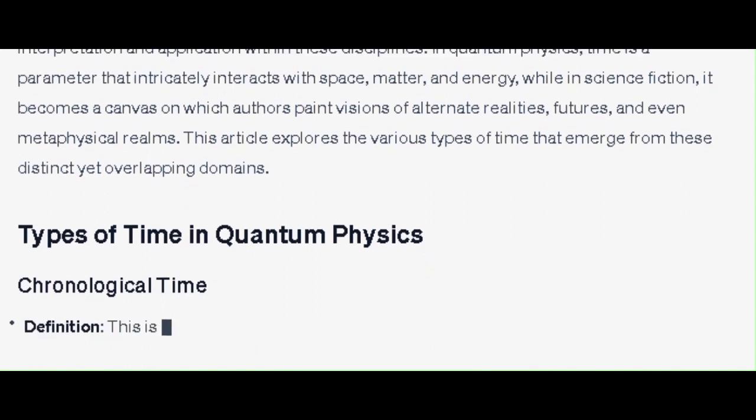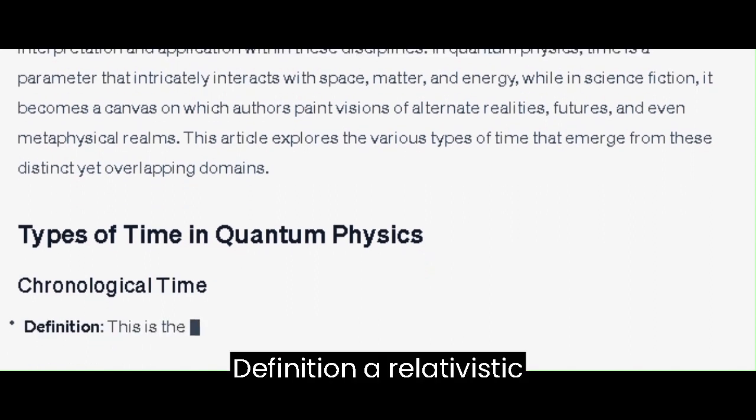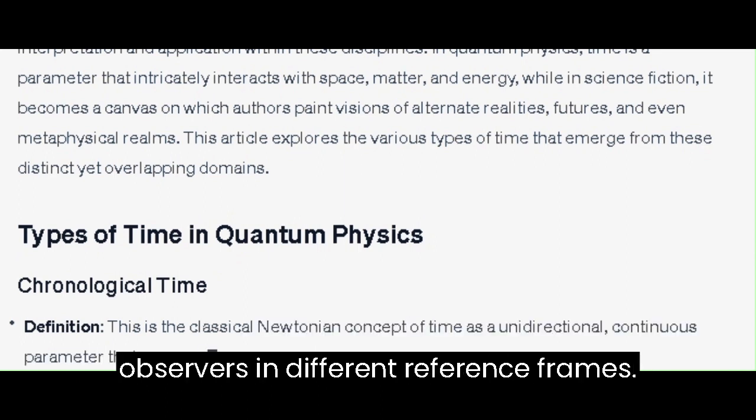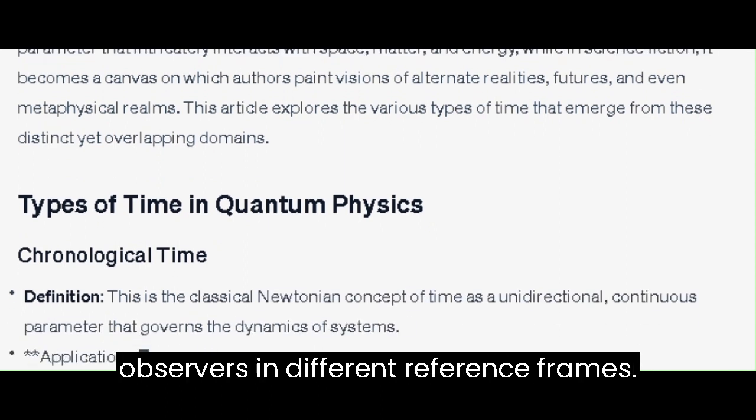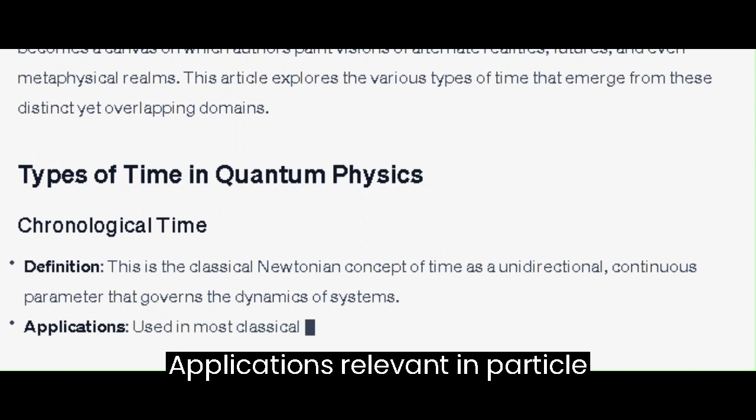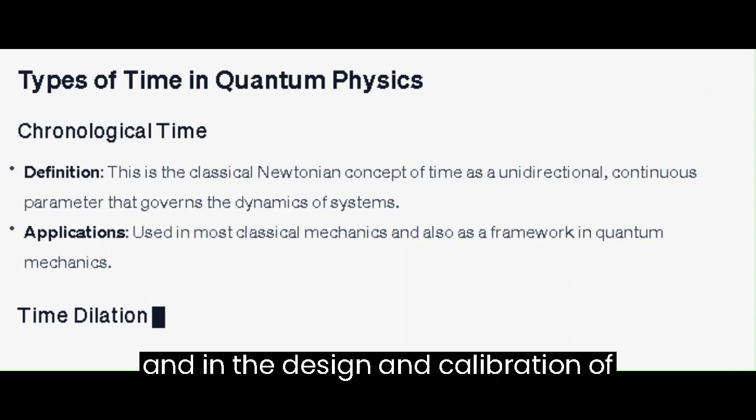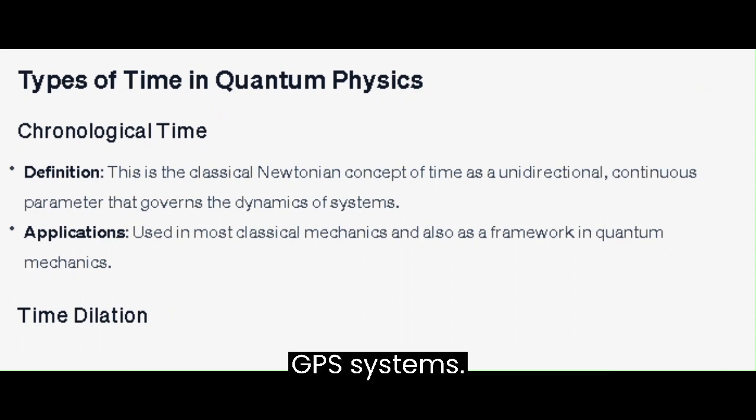Time Dilation - a relativistic concept where time passes differently for observers in different reference frames. Applications: relevant in particle physics, astronomical observations, and in the design and calibration of GPS systems.